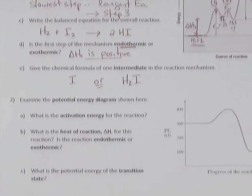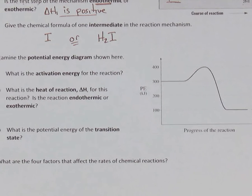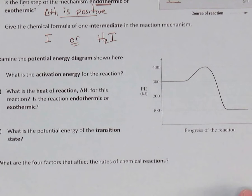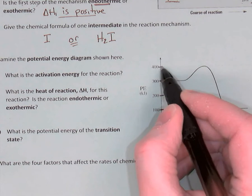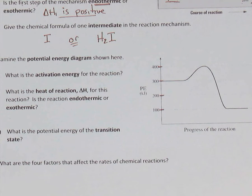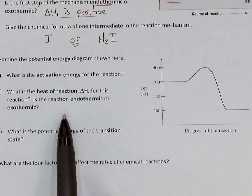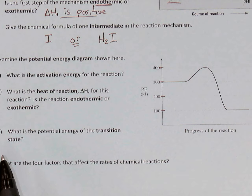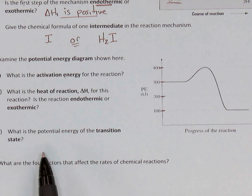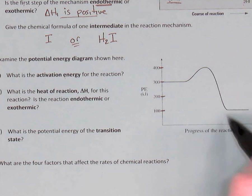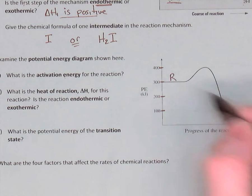For question two, we're shown another potential energy diagram and asked to answer questions with numbers. The y-axis shows 100, 200, 300, and 400 kilojoules. Pause the video and determine the activation energy, the heat of reaction, whether it's endothermic or exothermic, and the potential energy of the transition state. Because this diagram has only one hill, it must be a single-step process: reactants simply becoming products.